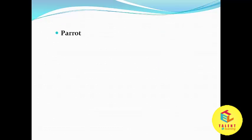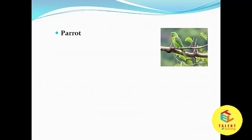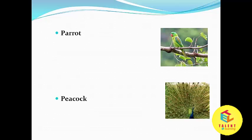Now, which is the alphabet? Yes, it's P. P for parrot. And it is parrot. Which is the alphabet here? Yes, it's again P. But here, P for peacock. And it is peacock.